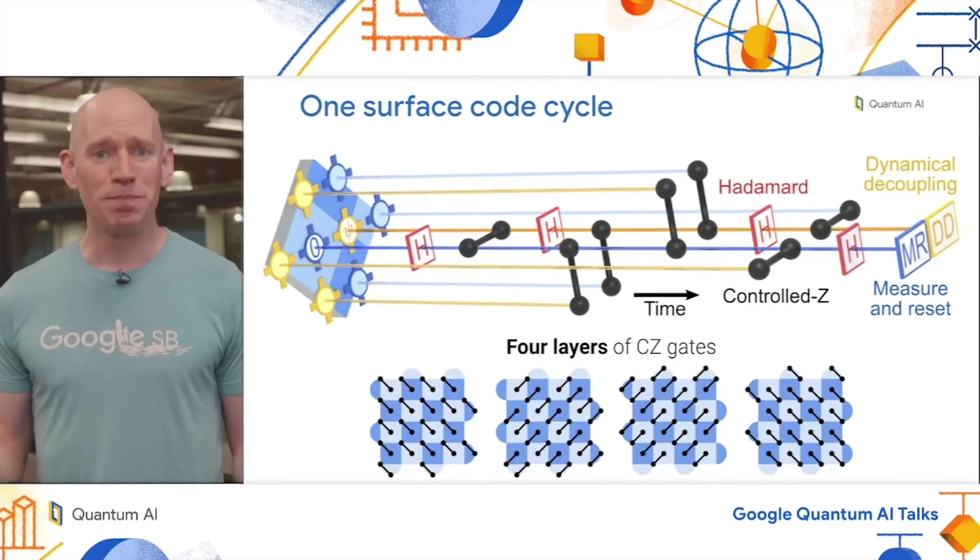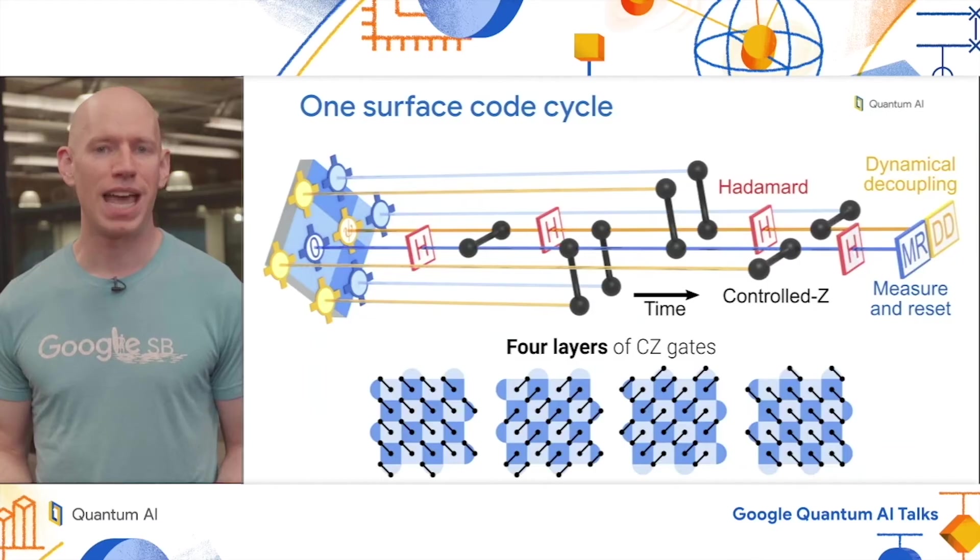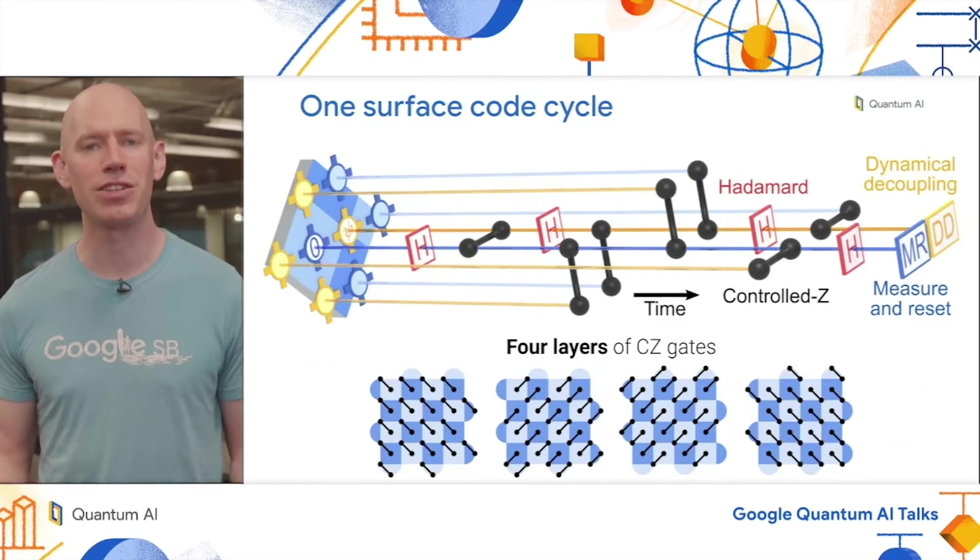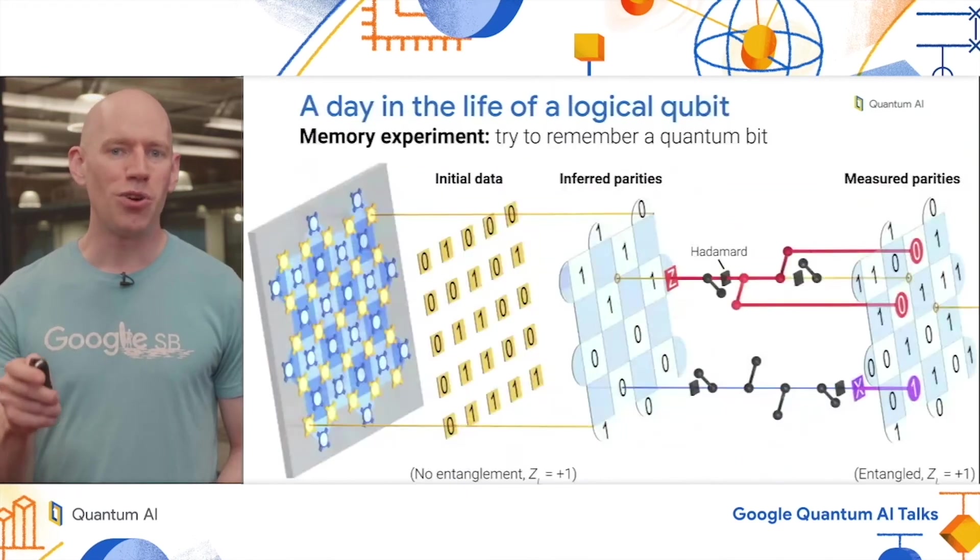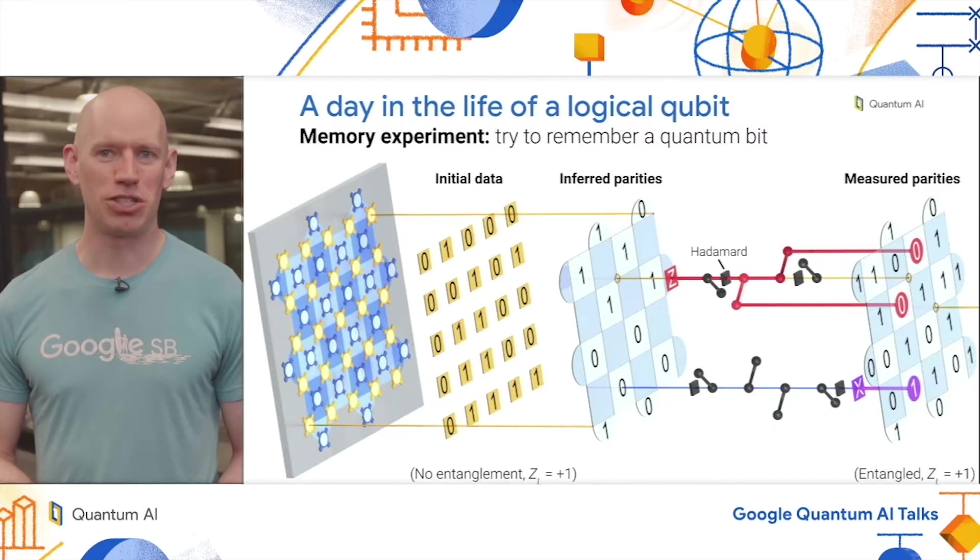We put these together and run all these stabilizers concurrently across the whole device. In terms of the control Z gates, it looks like four layers of highly parallel control Z gates. These are the same layers of CZs that we use in the benchmarking on the previous slide. When we're running the surface code, we're basically going to do all these stabilizers over and over again.